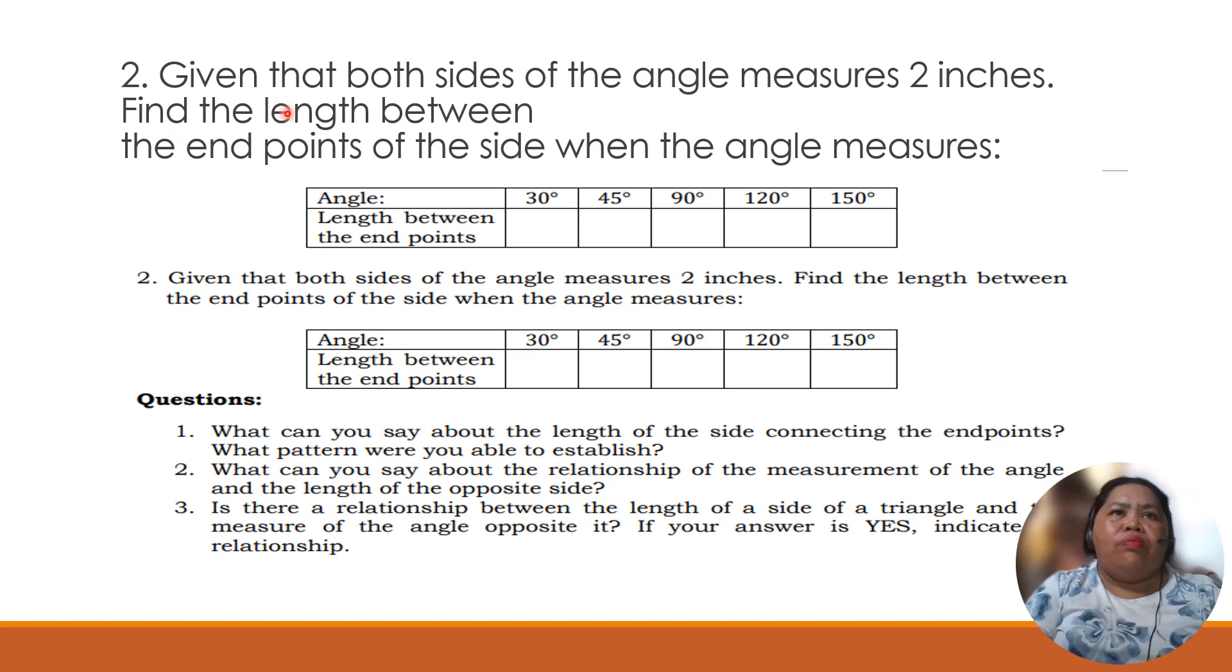So we have here a second example. Given that both sides of the angle measure 2 inches, find the length between the endpoints of the side when the angle measures. So we have here the length of the endpoints. For example, we have 30 degrees, 45 degrees, 90 degrees, and 120 degrees angles. So we will do it one by one.